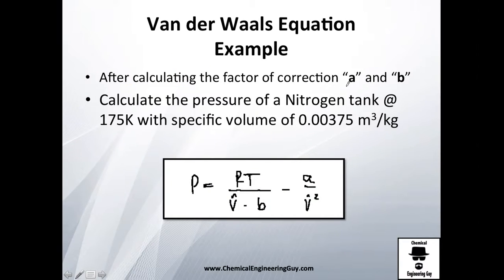So they tell me after calculating the factor A and B, of course the most logical part will be to actually use it. So let's use it for a tank that is at 175 Kelvin, that is a negative value, will be something about minus 100 Celsius, with a specific volume of 0.00375 cubic meters per kilogram.